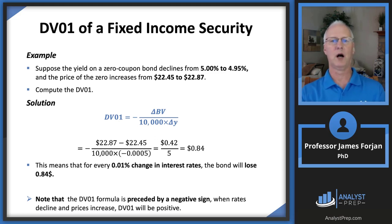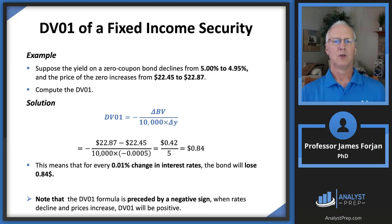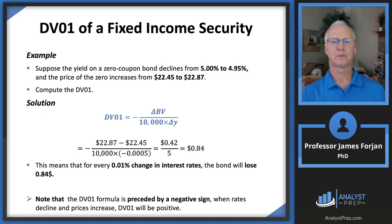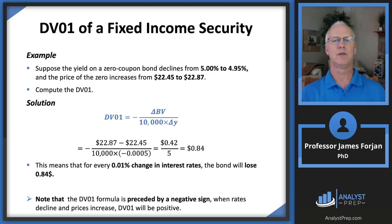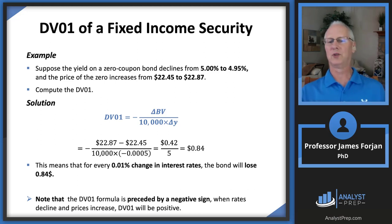Let's look at a quick example. We have a zero coupon bond. The yield declines from 5% to 4.95% — a one basis point change — so the price goes from 22.45 to 22.87. Using that formula, we get 0.84. So for a 0.01% change in interest rates, the bond will change by 84 cents.